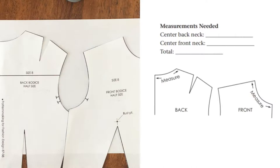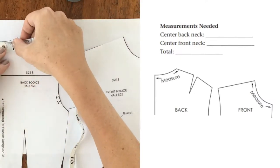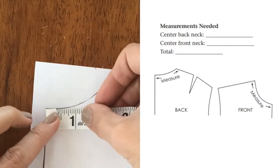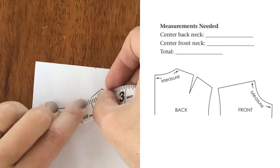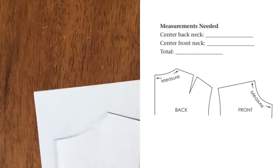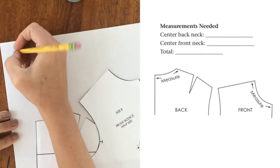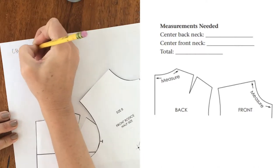The first thing is to measure our center back neck and record that measurement. So here we are. Okay, I get two inches. I'm going to write that here. My center back neck is two inches.